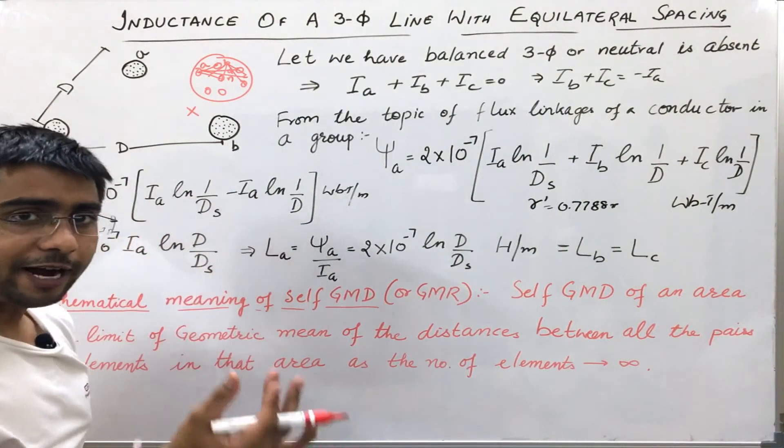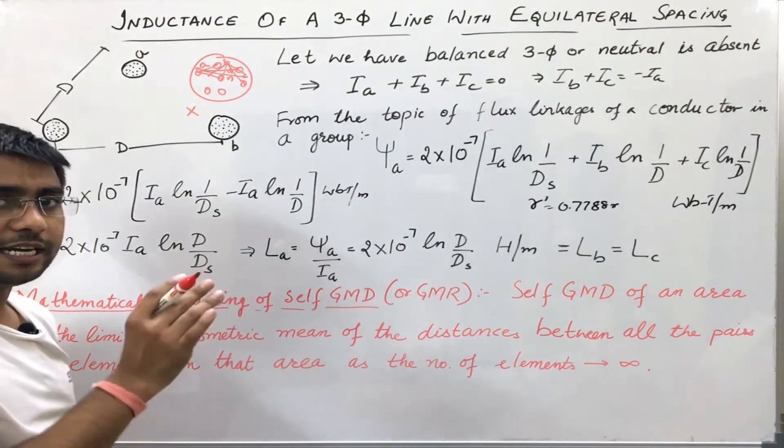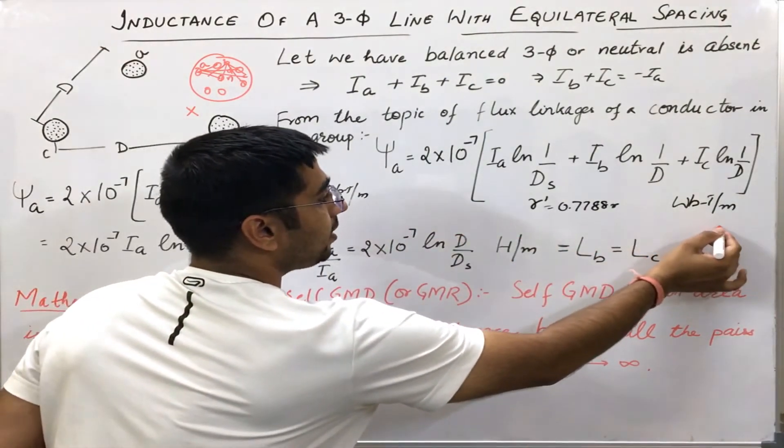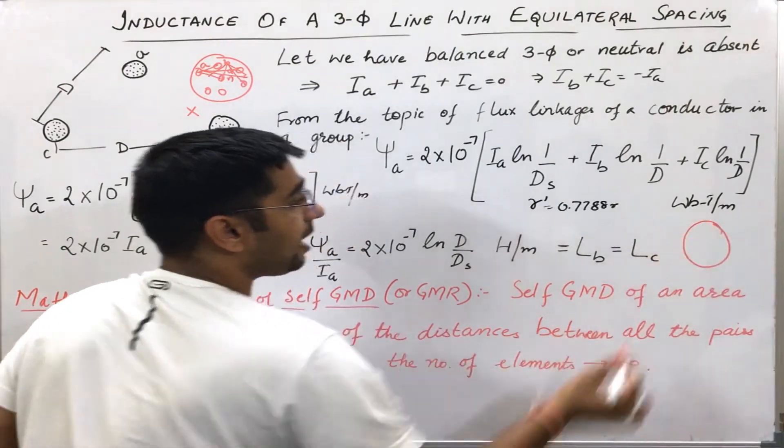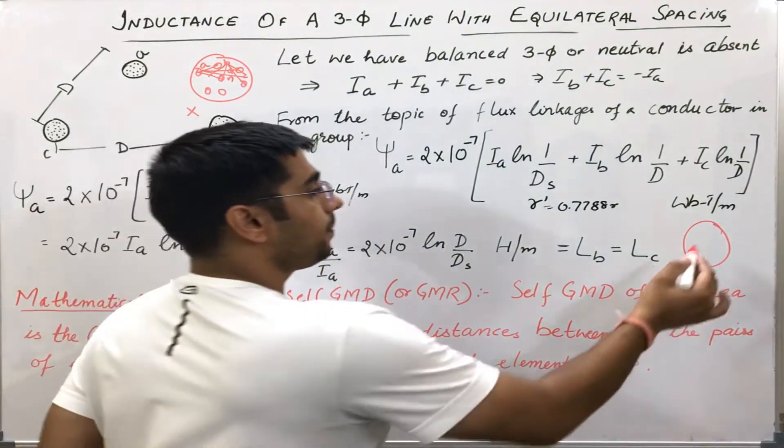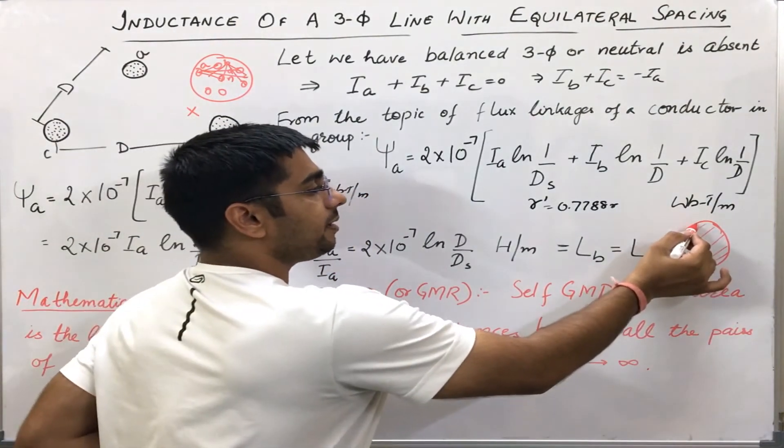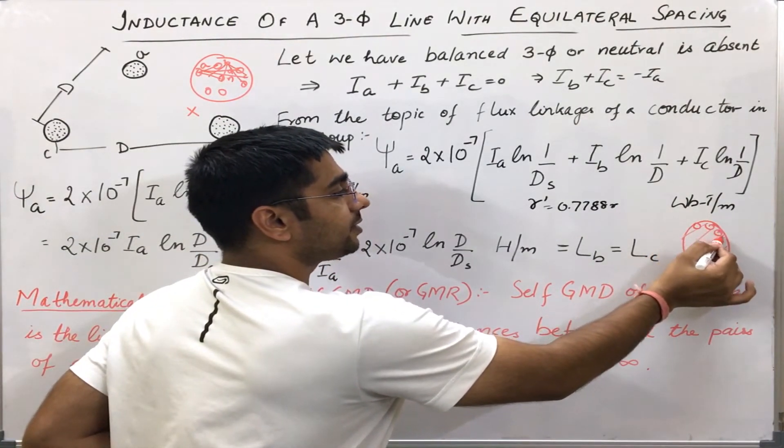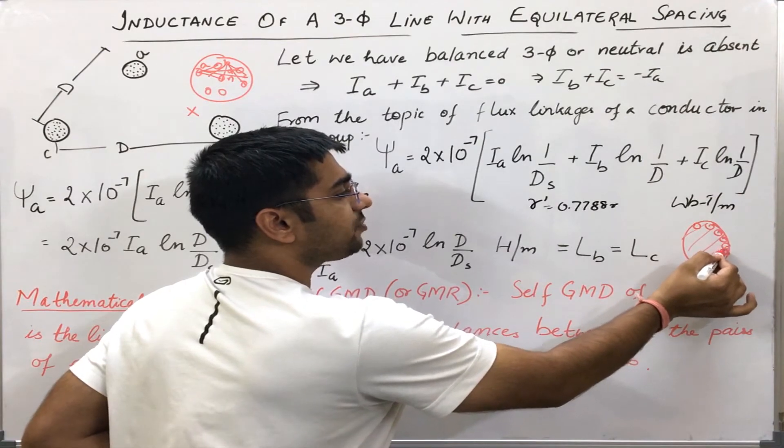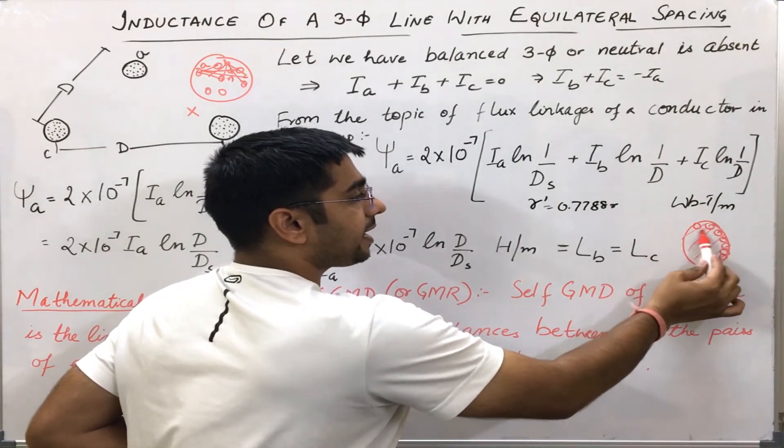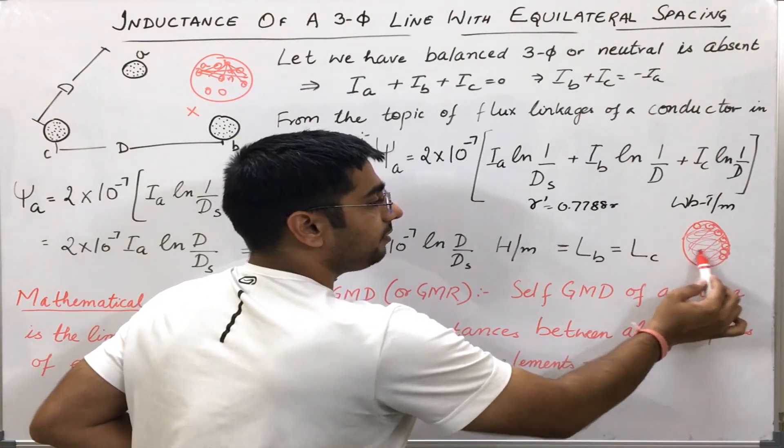Now, if I want to find out the GMR of a full solid conductor, I can divide this conductor into infinite strands. That is, the number of strands will be infinite. In this way, this will give me a conductor which is actually solid.